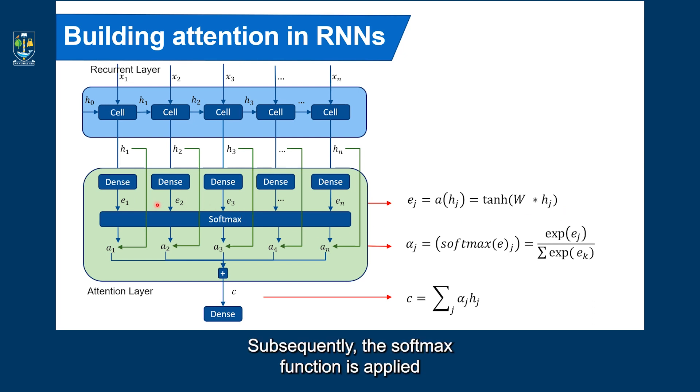Subsequently, the softmax function is applied to the vector E to produce the vector of weights A, which are also called importance score or attention scores. A, in other words, is a learnable function, and it reflects the importance of hidden state hj to the next hidden state. Aj is the amount of attention that the i-th output should pay on the input.